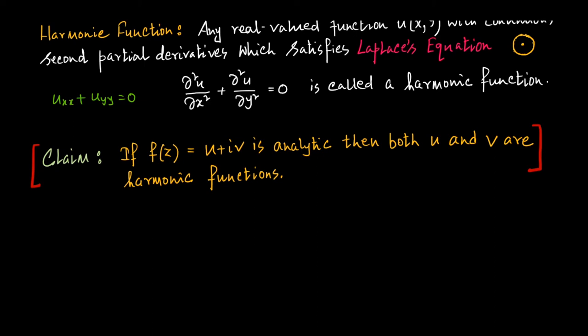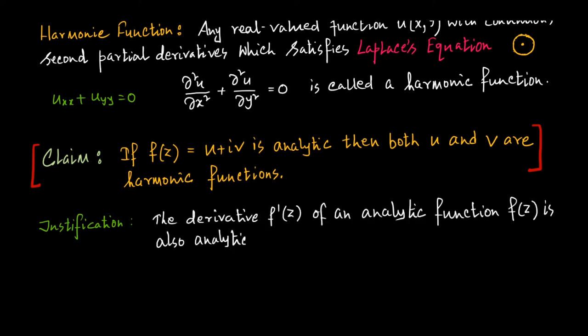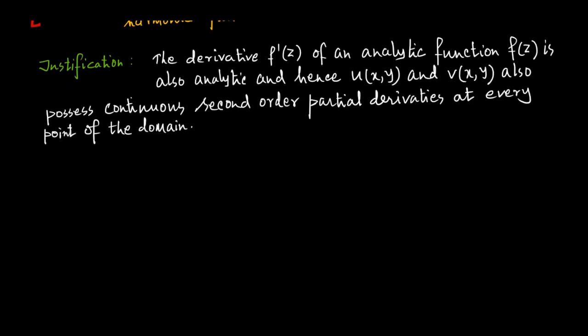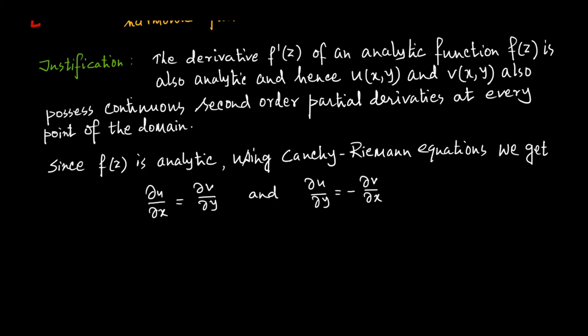So how to justify this claim? As discussed earlier, the derivative f'(z) of an analytic function f(z) is also analytic, and hence u(x,y) and v(x,y) also possess continuous second-order partial derivatives at every point of the domain. Now since f(z) is analytic, the real and imaginary parts satisfy the Cauchy-Riemann equations: del u del x equals del v del y, and del u del y equals minus del v del x.